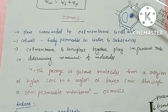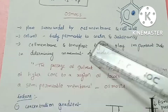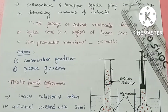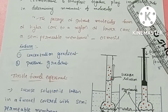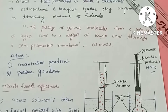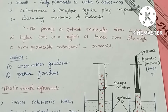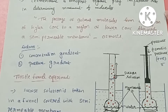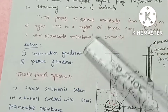Osmosis is the passage of solvent molecules from a region of higher concentration to a region of lower concentration through a semi-permeable membrane. Osmosis is governed by two factors: concentration gradient and pressure gradient.